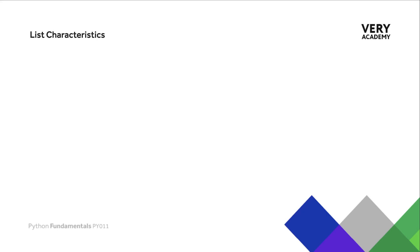Each of the four built-in data types in Python used to store collections of data all have different characteristics. These are the main characteristics of a list. The list is ordered, and having an ordered list makes it really quite useful to work with data in our application.